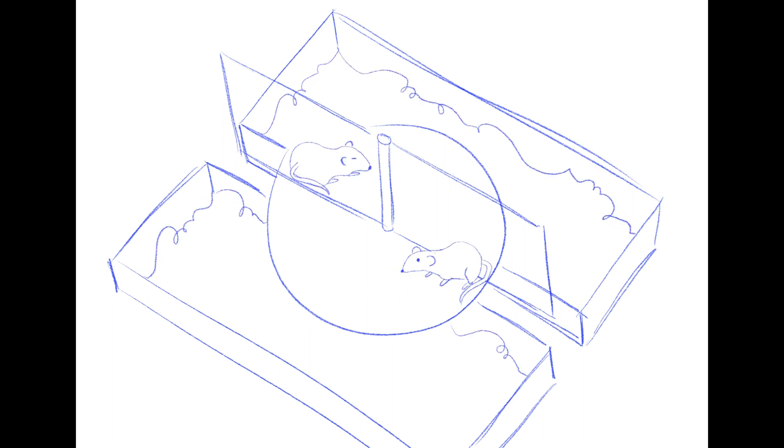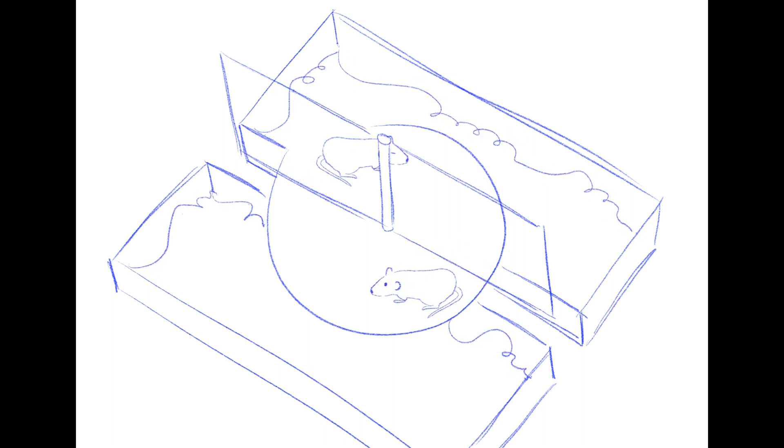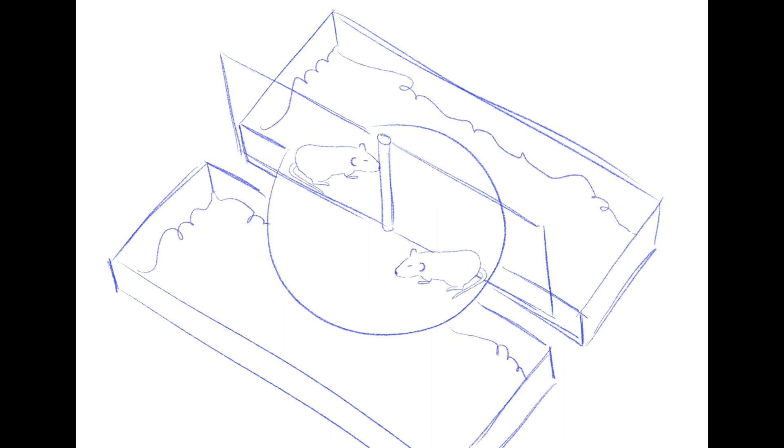When the experimental rat began to fall asleep, the disc would spin, such that both rats would have to scramble to stay on the disc. As such, while the control rat managed to have short bouts of sleep when the experimental rat was awake, the latter had no such luxury.